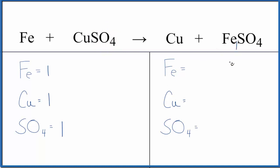Product side, we have one iron and one copper, and then again, we have one sulfate ion. You can see very clearly here, we're done. This equation is balanced.